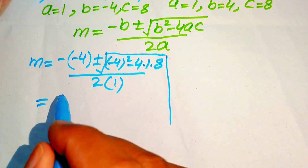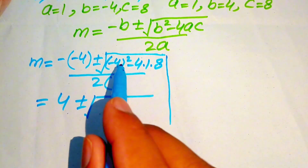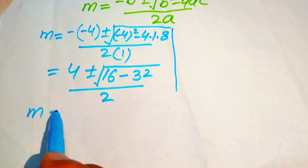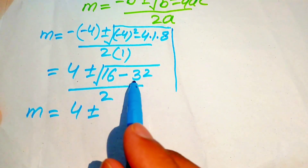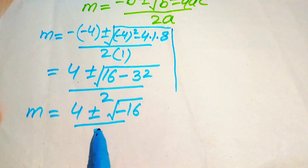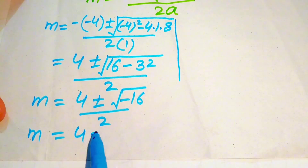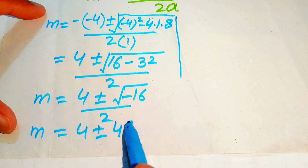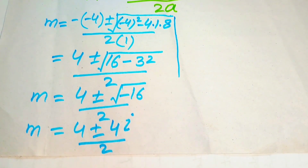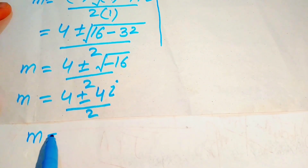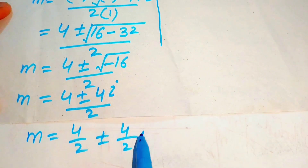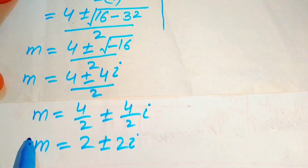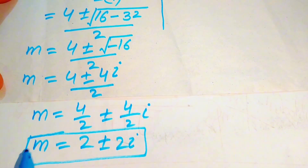Simplifying: minus times minus gives plus 4, plus or minus square root of 16 minus 32, which equals square root of minus 16, divided by 2. So m equals 4 plus or minus 4i, all divided by 2. Separating terms: m equals 4 over 2 plus or minus 4 over 2 times i, giving m equals 2 plus or minus 2i. These are the first two complex roots.